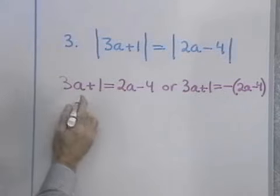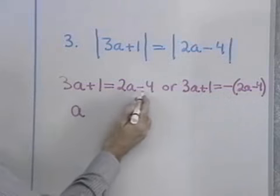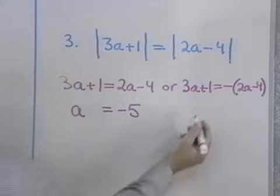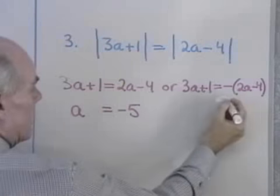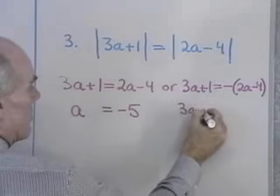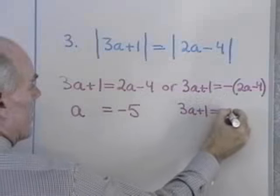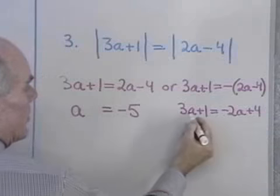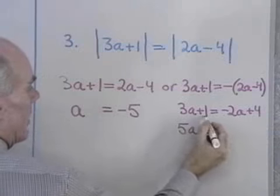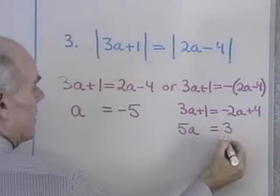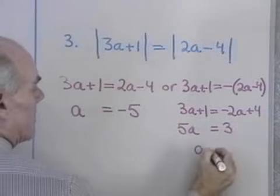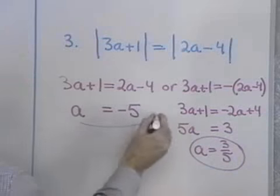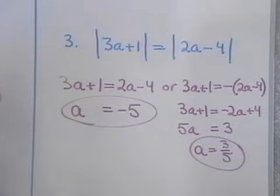In this case, I'll add negative 2a to both sides to begin with, and a negative 1 to both sides, and I end up with a is equal to negative 5. Over here, I'll have to remove these absolute value symbols to begin with. So I have 3a plus 1 is equal to negative 2a plus 4. Now I'll add 2a to both sides and get 5a, and I'll add negative 1 to both sides and get 3. Divide both sides by 5: a is equal to 3 fifths. So I have two solutions: a is equal to negative 5, and a is equal to 3 fifths.